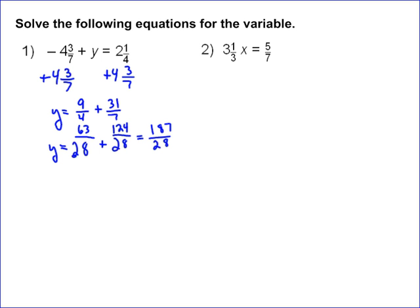So that's your answer, 187 over 28. You could write it as a mixed number if you like, but this is a good enough answer.